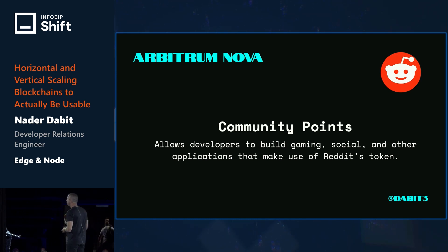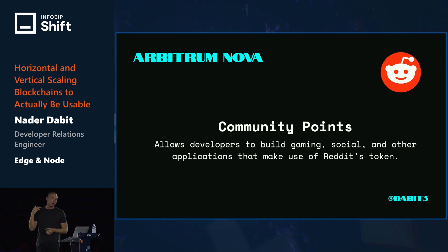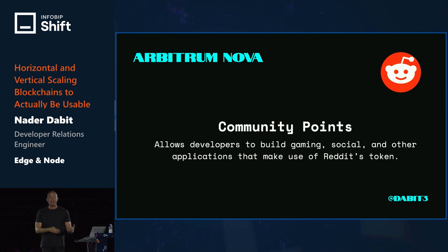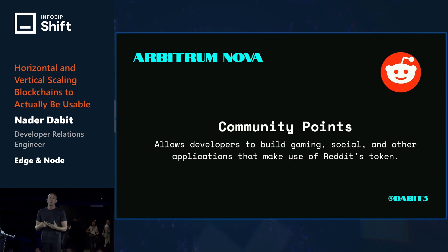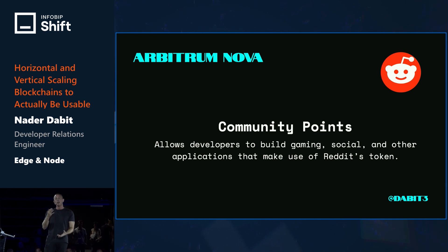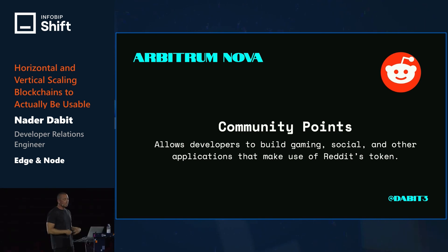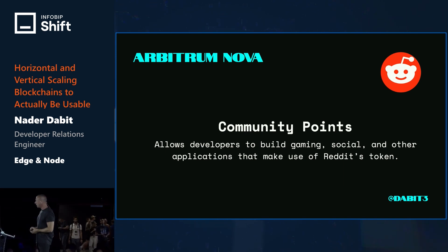This is a great use case for non-financial applications like gaming and social networks. Reddit is one of the first companies to pick this up for their community points — developers can build gaming, social, and other applications on top of that system. It makes sense for developers to build on APIs they can trust and expect to be around five or ten years from now. With Arbitrum Nova, you're essentially getting a compromise between security and scalability.